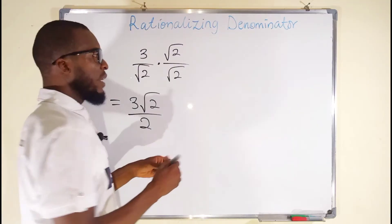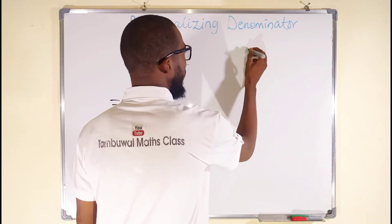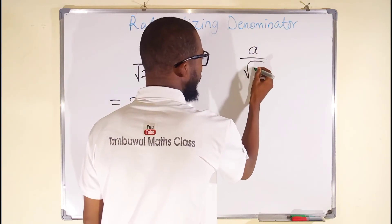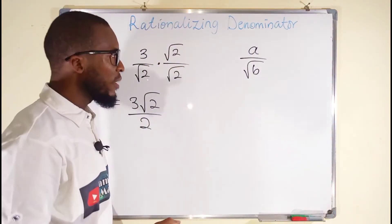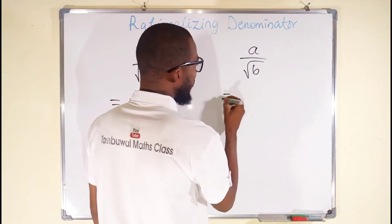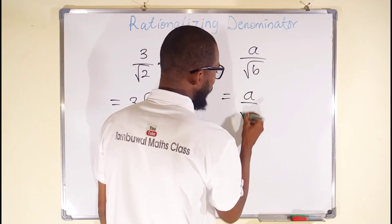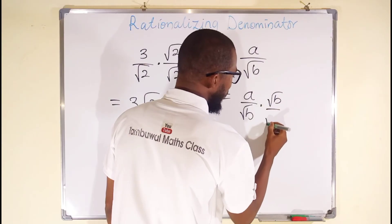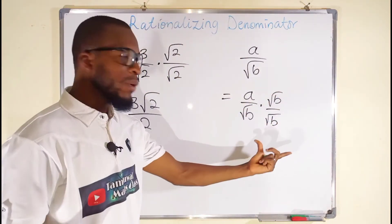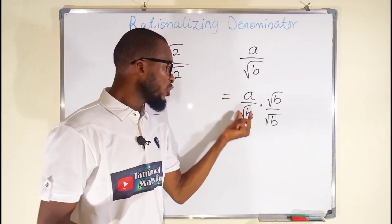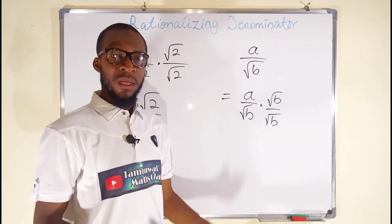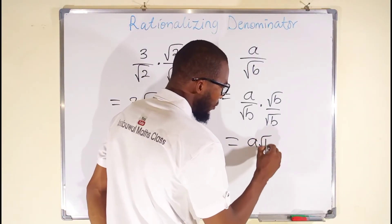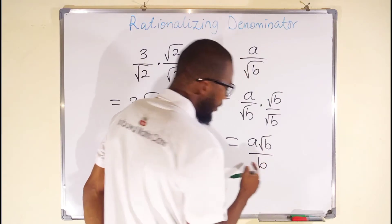In general, if you have a rational number divided by an irrational number — this is the same thing as saying a divided by root b — to make it rational, you multiply by root b divided by root b, because root b divided by root b is the same thing as 1. Multiplying by 1 does not change the initial statement. Finally, you can see that this gives a root b divided by b in standard form.